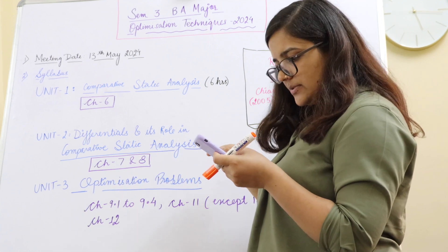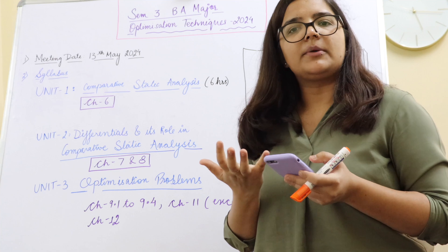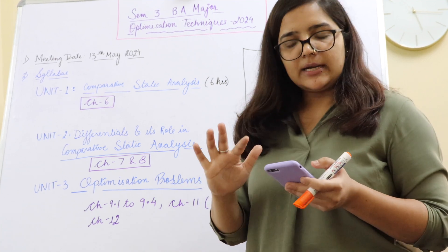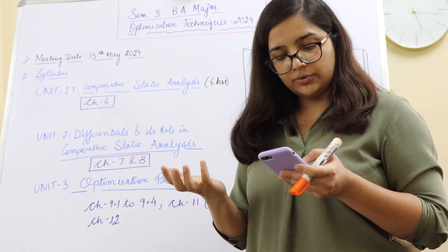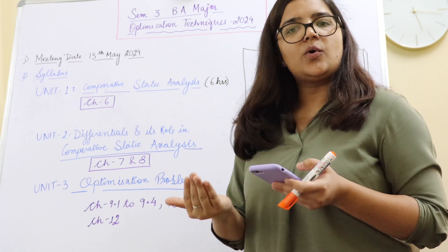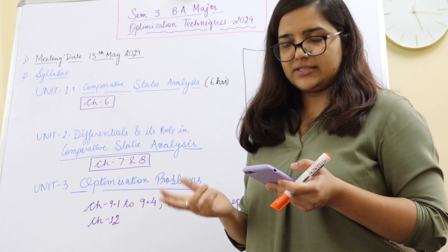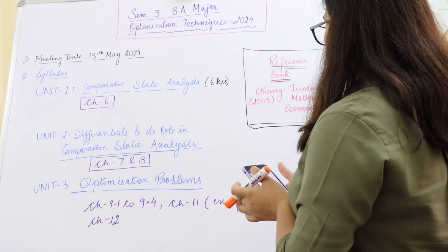And the final unit, unit number 3 optimization problems. In this we are going to talk about what is constrained optimization? What is the single variable, multi-variable Lagrange function? What is concavity? What is concave, convex, quasi-concave? All these concepts we are going to talk about.